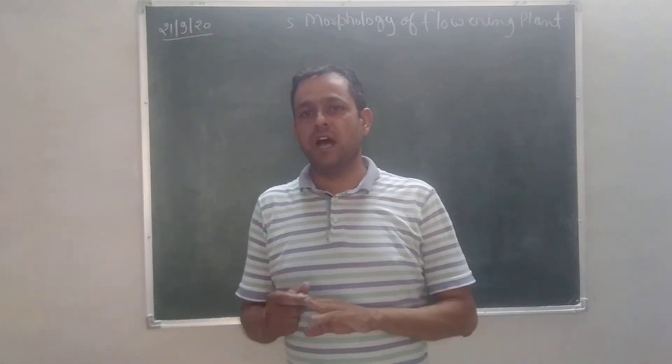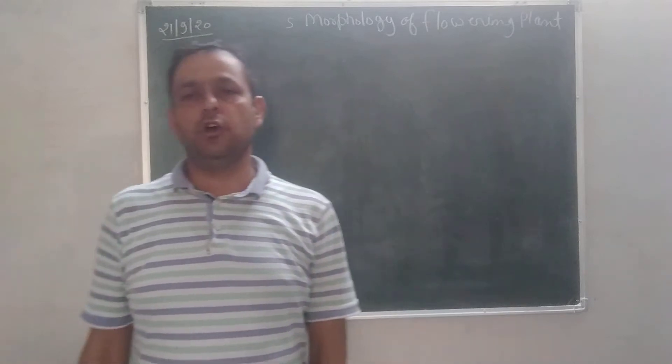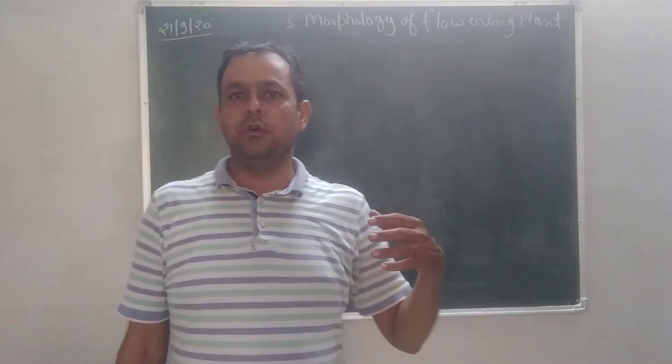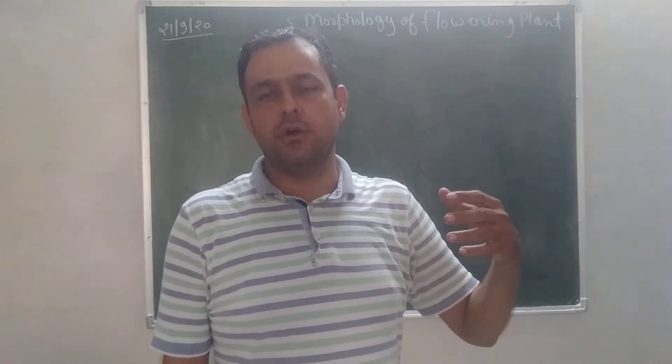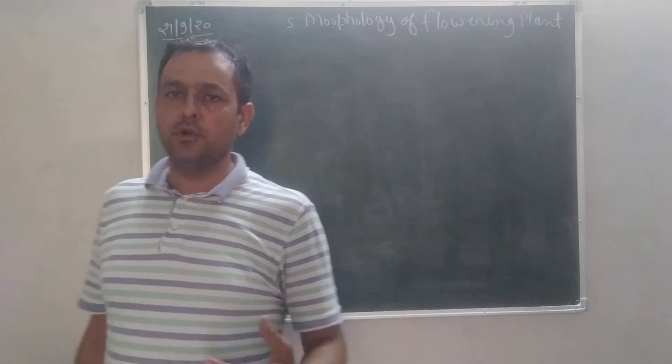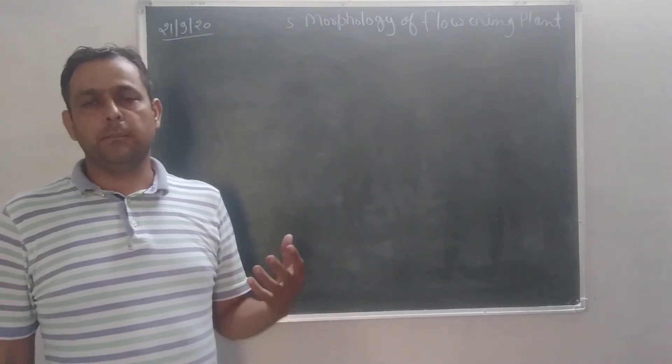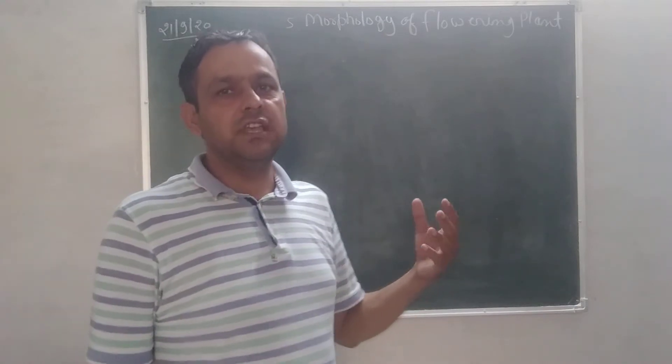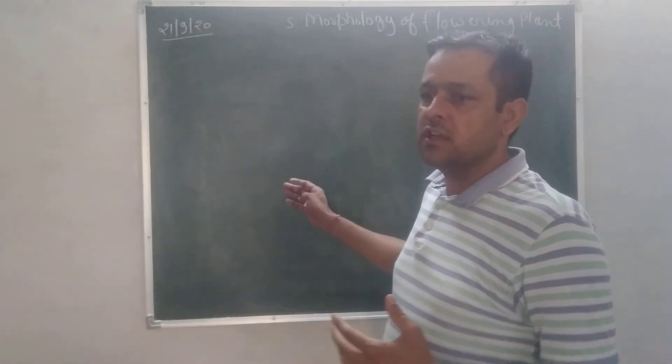Root, Stem, Leaves are the vegetative part of the plant and inflorescence means how the flowers are arranged on a plant. Flower and fruit, seed are the main basic external character of a plant. These characters we will study in this chapter.